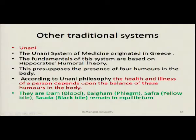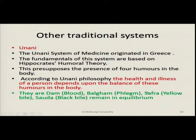Now let us see other traditional systems. For example, Yunani. The Yunani system of medicine originated in Greece, and the fundamentals of this system are based on Hippocrates' humoral theory. This supposes that there are four humors in the body, and the health and illness of a person depends upon the balance of these four humors: the dam or blood, the bulgam or phlegm, the safra or yellow bile, and the sauda or black bile. These four humors must remain in equilibrium for a person to be healthy. If there is any imbalance, then depending upon where the imbalance is created, that particular disease is manifested according to Yunani philosophy.